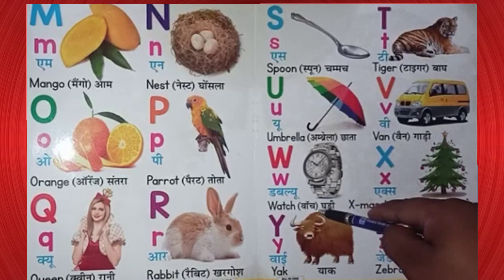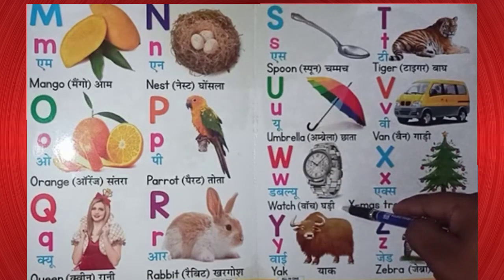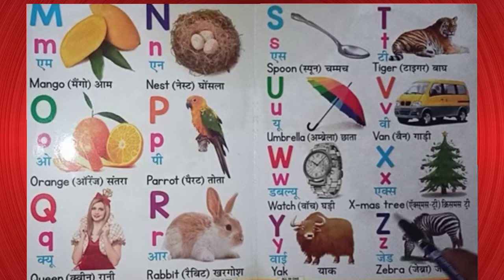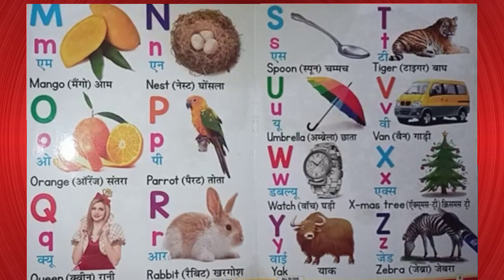W. W for water. Water means paani. X. X for Xmas tree. Xmas tree means Xmas tree.